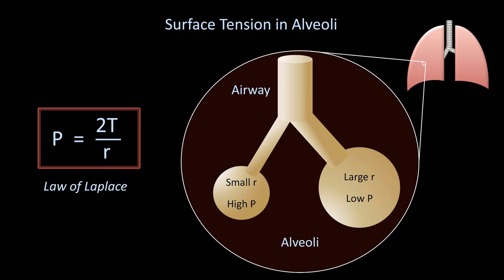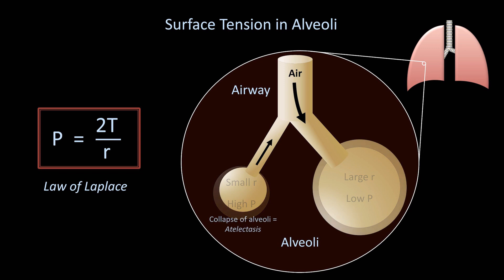So when the patient takes a breath of air in, the air travels preferentially to the large alveolus with low pressure. Not only that, air could even travel backwards from the small alveolus with high pressure. The consequence of this is that large alveoli risk becoming overdistended and small alveoli risk collapsing altogether, a condition known as atelectasis. Alveoli that have totally collapsed can no longer take part in gas exchange, leading to diminished ability of the body to take in oxygen.